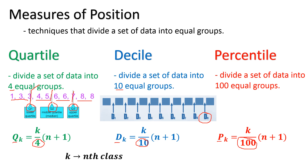What does k represent? k represents the nth class. For example, if you are dealing with quartile 3, your k is 3. If you are dealing with decile 7, your k is 7. While n is normally the one that represents the number of data that we have. To understand, let us have a couple of examples.